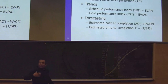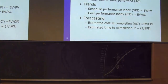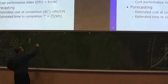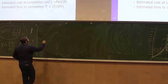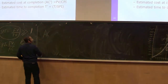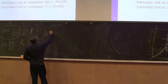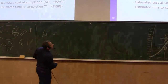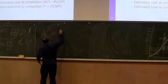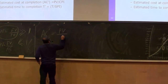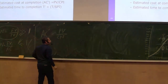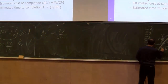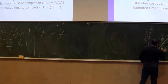These two indices define the trend and help predict the future. From SPI and CPI, we can even forecast the Estimated Cost at Completion. The formula is: planned value of the project divided by the CPI. For instance, if the earned value was 600 and the planned value was 1200.